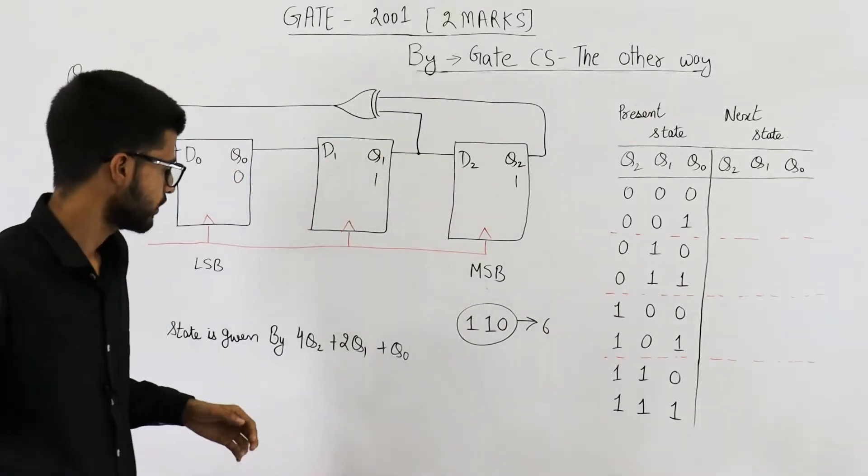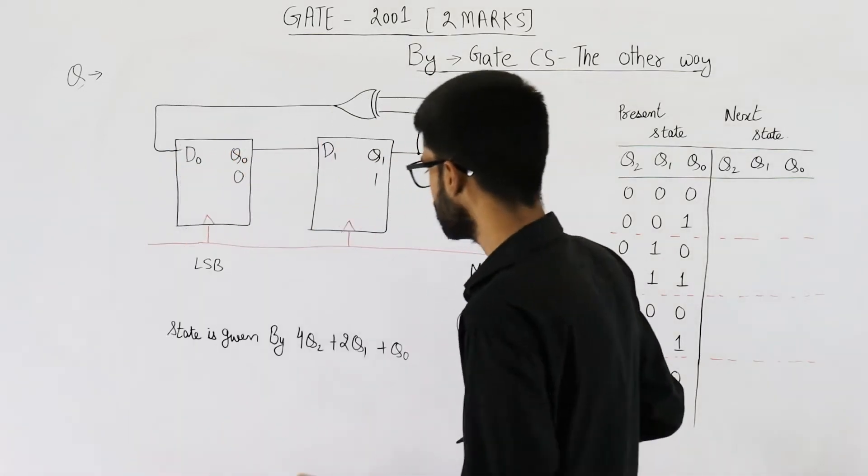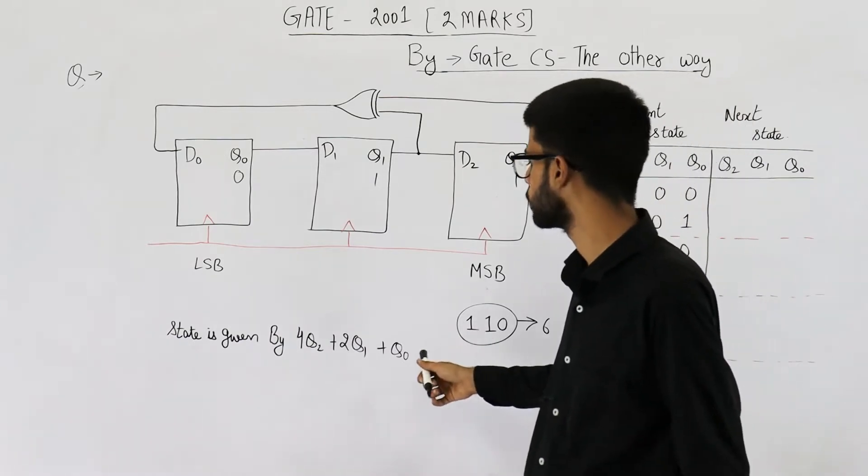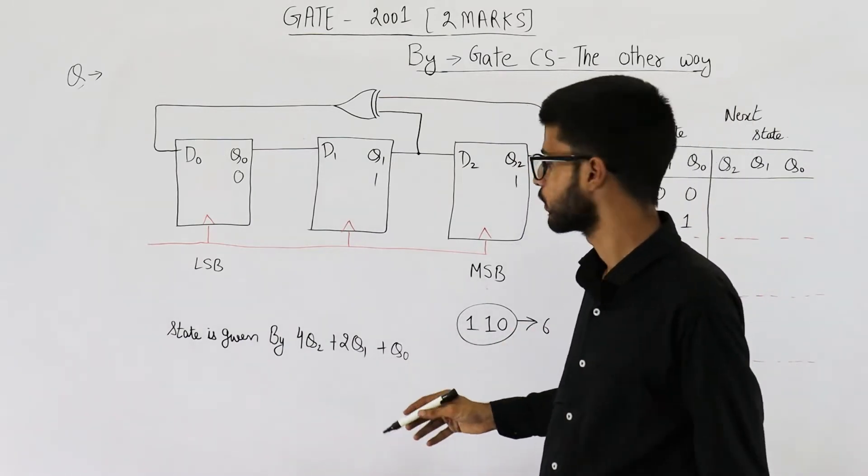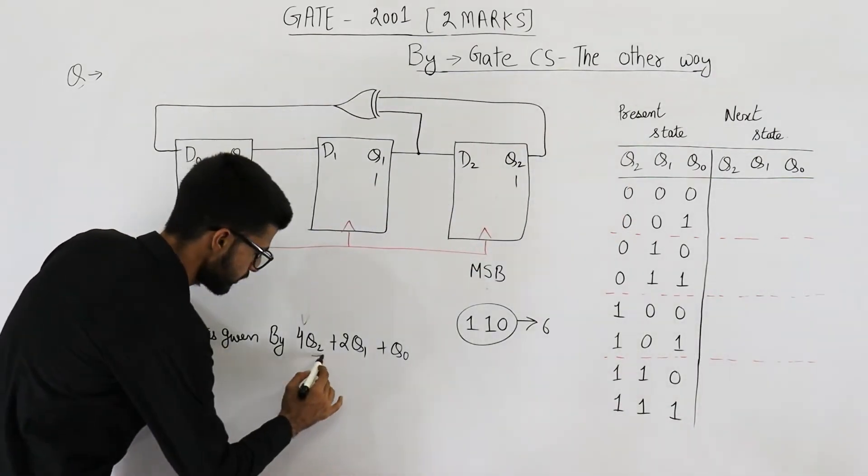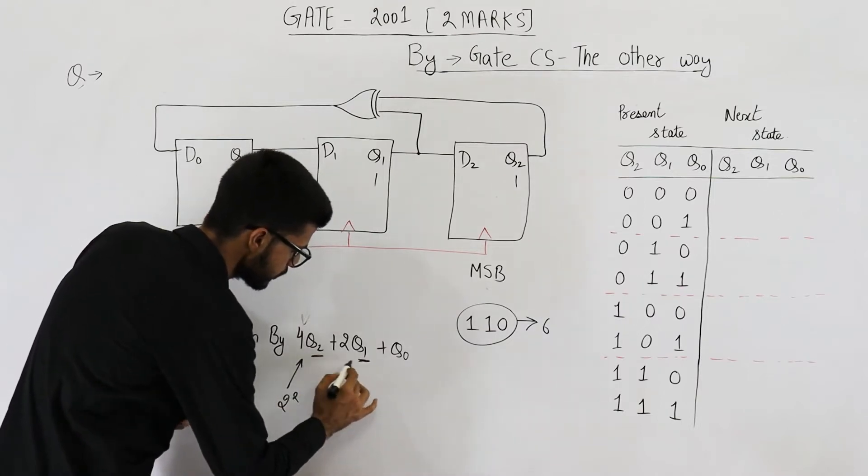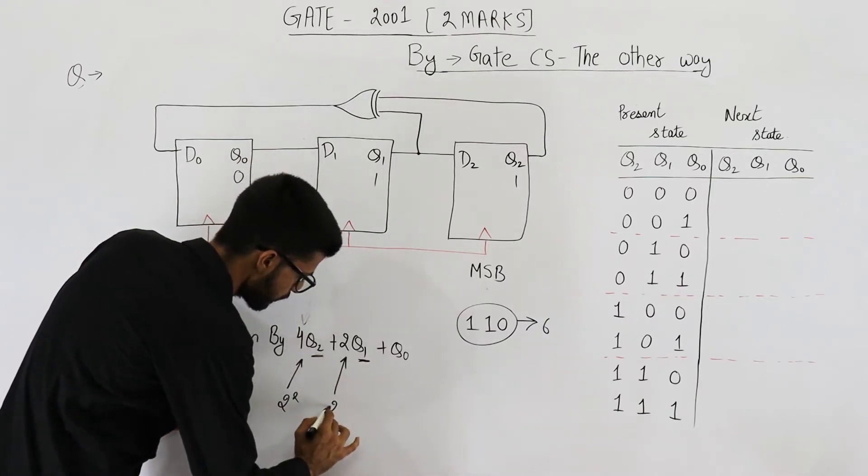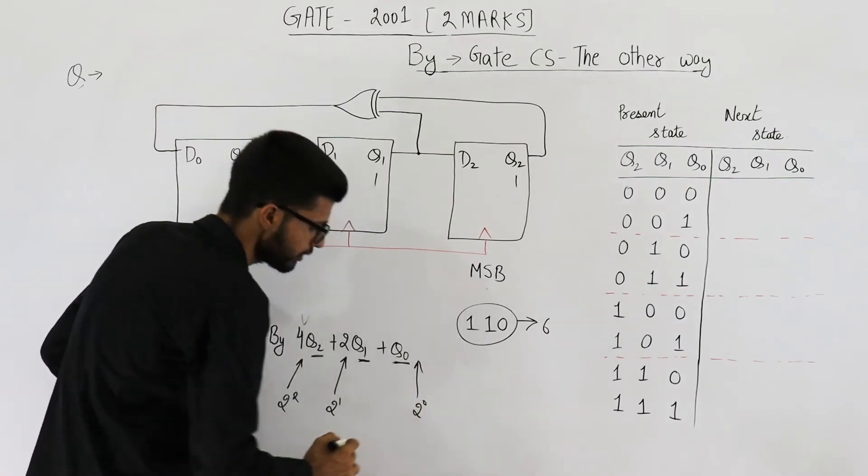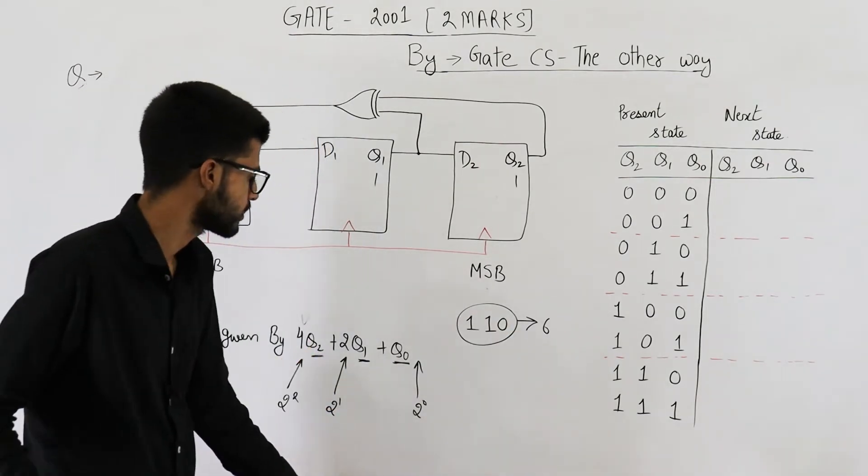But they have given this formula to find out the state. Let us contemplate what this formula is. It is nothing but the formula to convert a normal three digit binary number to a decimal number. This one is 2 raised to the power 2. So first bit, that is q2 into 2 raised to the power 2, then second bit which is q1 into 2 raised to the power 1, then third bit into 2 raised to the power 0. That is how you convert a normal binary number into a decimal number. So that is just given to confuse you.